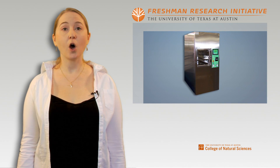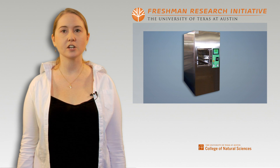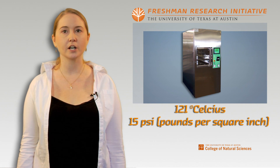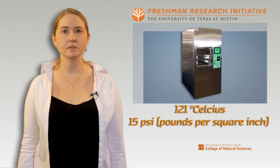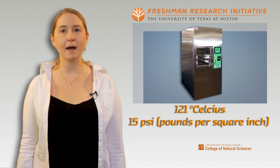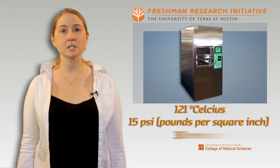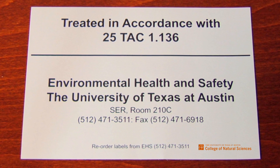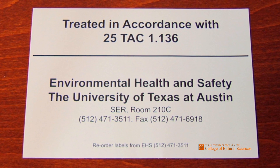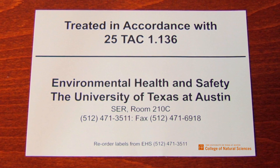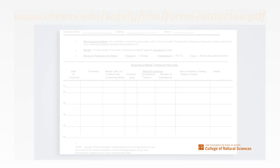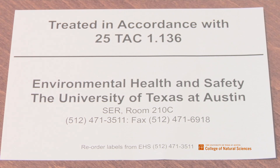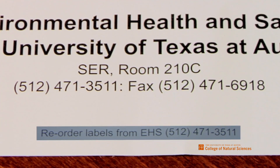Biohazard waste must be autoclaved before discarding as regular trash. Autoclaving is a method of sterilization that uses high heat and pressure to kill most microorganisms. The autoclaving time depends on the amount and type of waste, and at a minimum must be 30 minutes. If the lab generating the waste chooses to autoclave their own waste, they must affix an autoclave treatment label on the bag once the bag is autoclaved, and document waste treatment in the designated autoclave data log. Autoclave treatment labels are available from EHS.